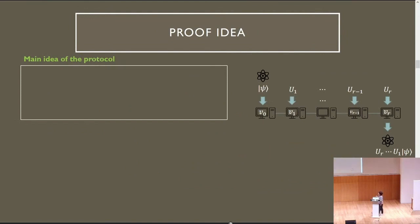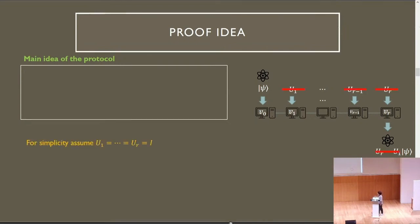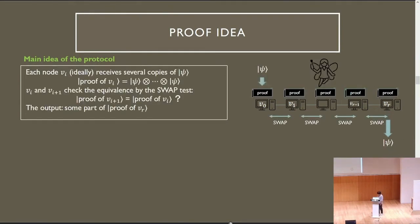We describe the main idea of our protocol. For simplicity, we assume each input to nodes V1 through BR is the identity. So the goal of the problem becomes to output psi at the rightmost node.